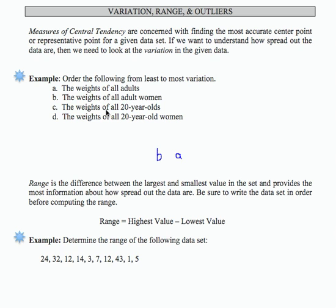Then if we look at the weights of all 20-year-olds, we're narrowing down our data set even more. So we have fewer elements in the set, and 20-year-olds compared to all adult women are going to have even less variation.